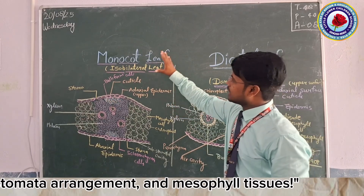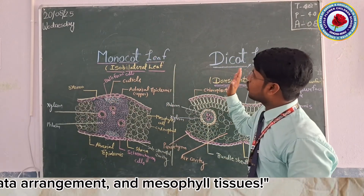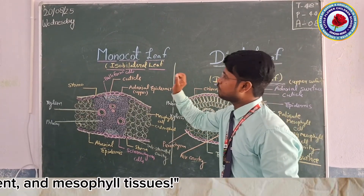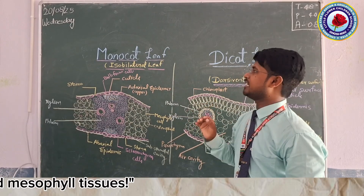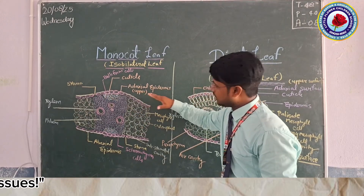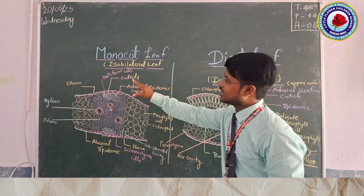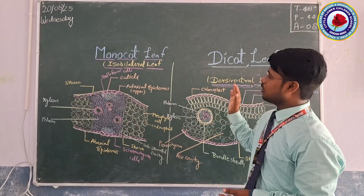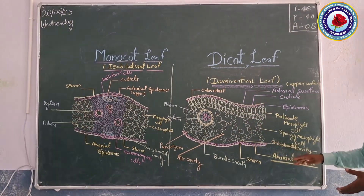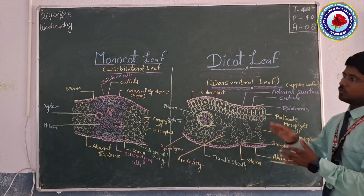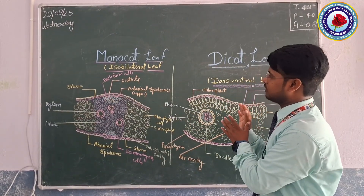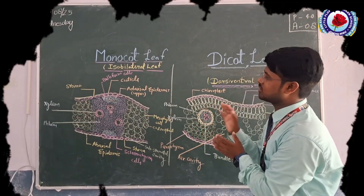Comparing monocot and dicot leaves, the monocot leaf has a very special characteristic feature — the bulliform cell — which is only present in the monocot leaf. In the monocot leaf, stomata are present on both surfaces, that is the adaxial as well as the abaxial surface, while in the dicot leaf a large number of stomata are present only on the abaxial surface, that is the lower epidermal part. There is a clear difference in the anatomy of both monocot and dicot leaves.